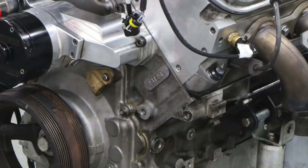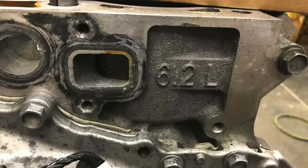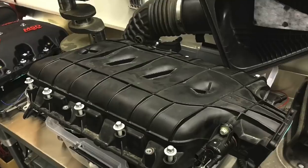In this video, we're going to compare the Gen 4 all aluminum 6.2 liter LS3, the high watermark of the LS3 engine family, to the motor that GM used to replace it. Of course, we're talking about the all aluminum 6.2 liter Gen 5 LT1.